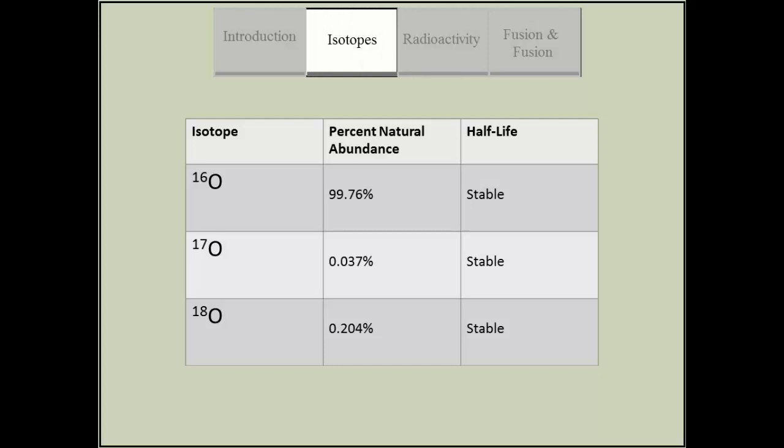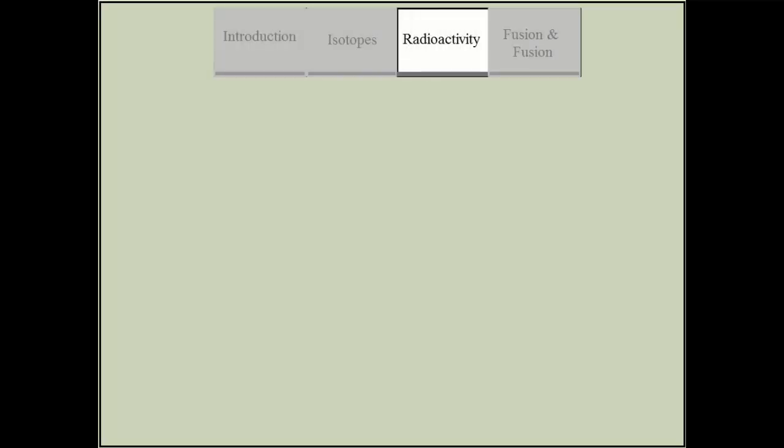There are three naturally occurring stable isotopes, with the most common being Oxygen-16 with a natural abundance of 99.76%. There are also 14 radioisotopes.